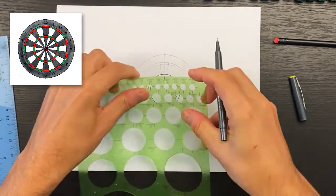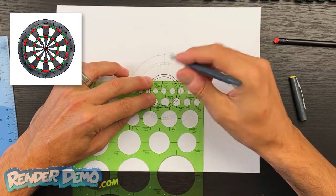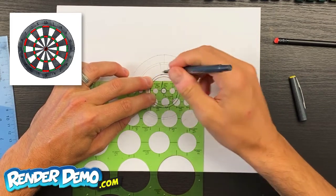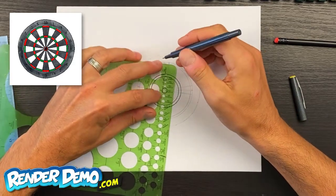Now we'll add in the bullseye right in the center, so line up your crosshairs. We'll do something like that.